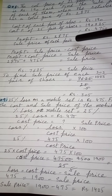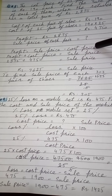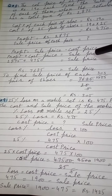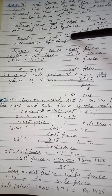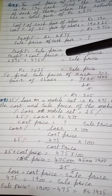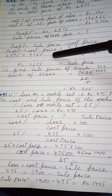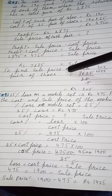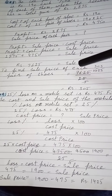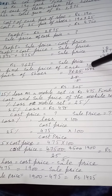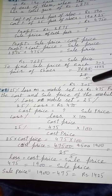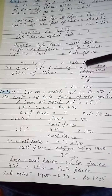Formula لکھیں: profit is equal to sale price minus cost price۔ Sale price find out کرنی ہے تو cost price دوسری سائڈ پہ جا کے plus میں convert ہو جائے گی۔ Values put کریں تو sale price 7625 آگئی۔ لیکن ایک pair کی بتانی ہے، یہ 25 pairs کی نکلی ہے تو 25 سے divide کریں، cutting کر دی۔ ایک pair کی sale price 305 روپیز آئی۔